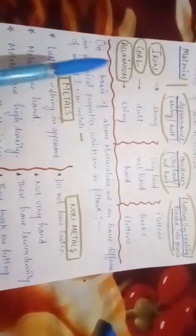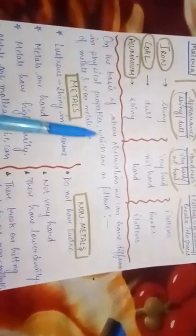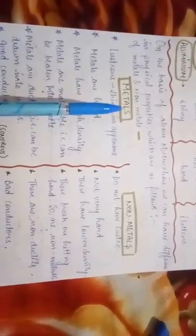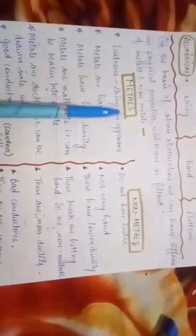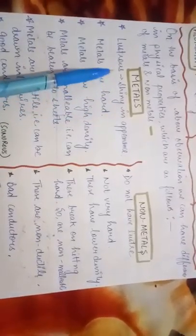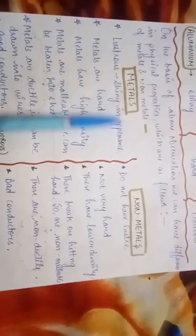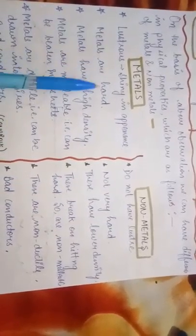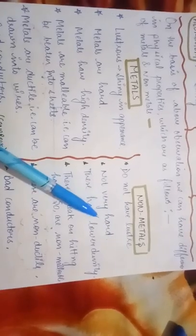So on the basis of above observation, we can have difference in physical properties which are as follows. Metals are the substances which are shiny in appearance or we can say that they are lustrous. However, nonmetals do not have luster. Metals are very hard and nonmetals, they are not hard.